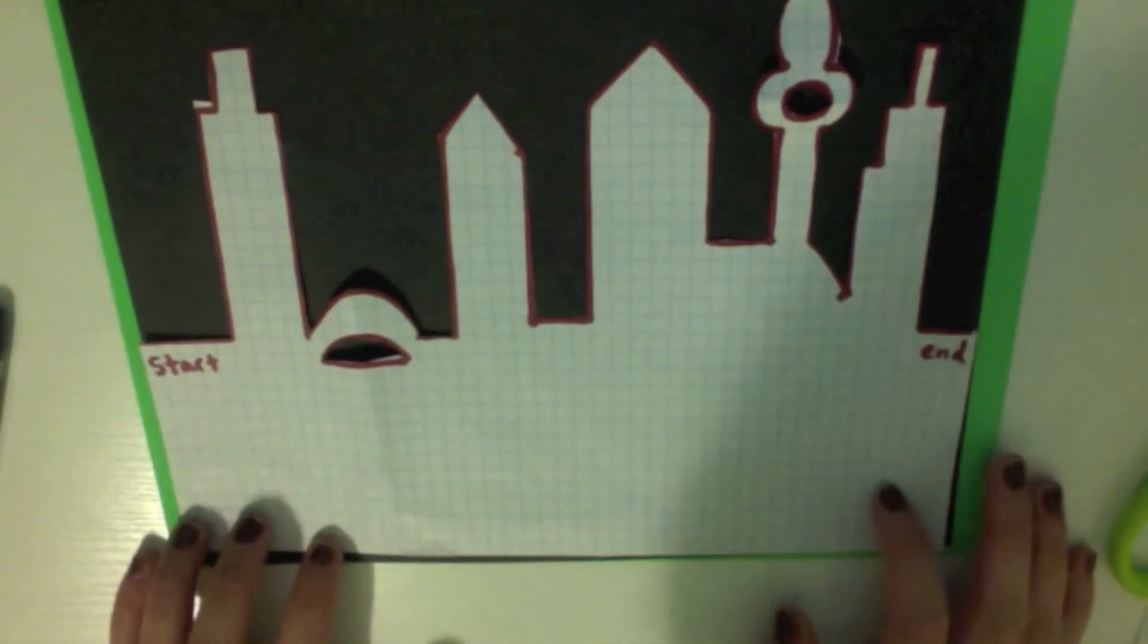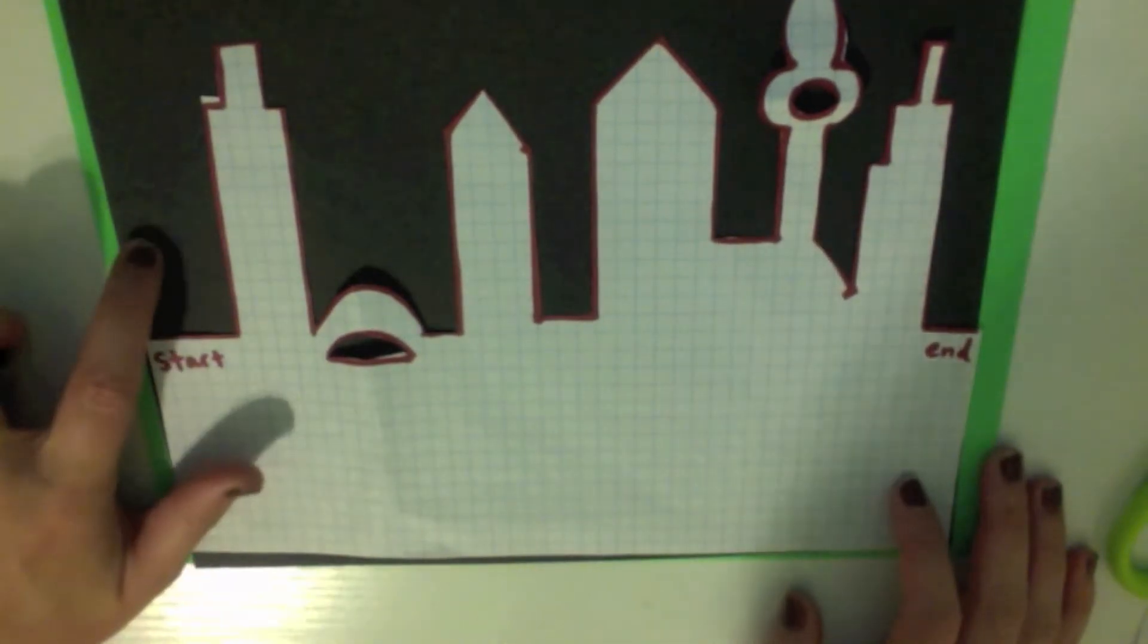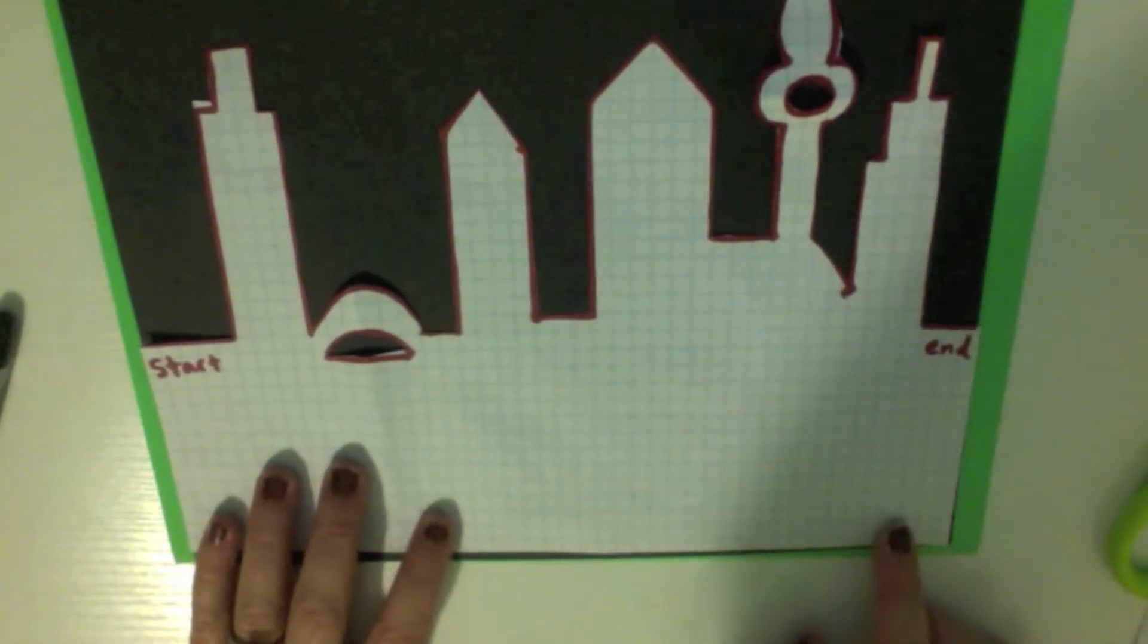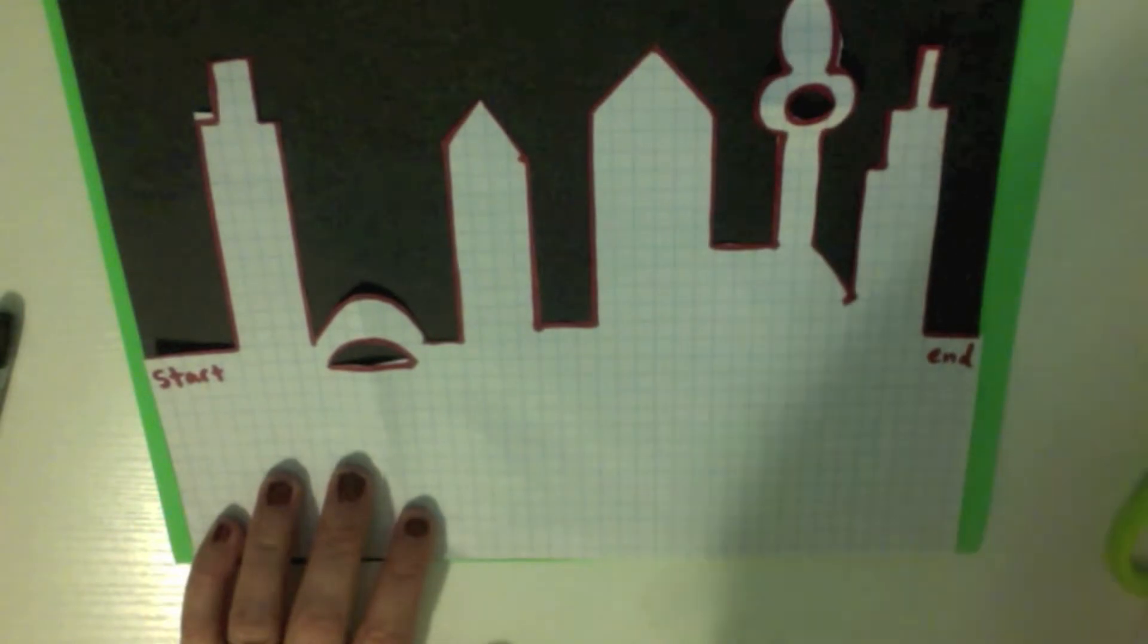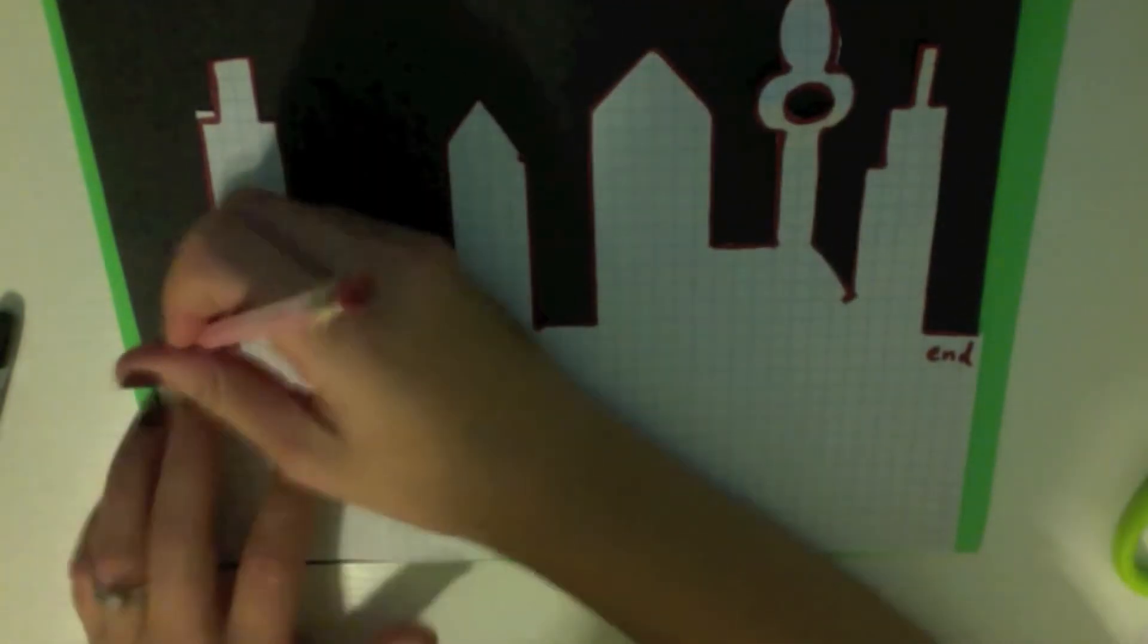Once you have your city cut out, you're going to trace it on a piece of black paper. Line your city up with the bottom and the side of the paper and use a pencil to trace your lines.